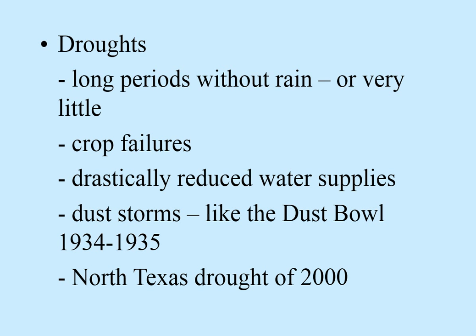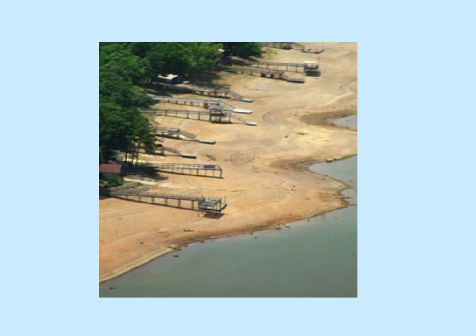Droughts — a long period without a lot of rain. Things that happen as a result include crop failures and drastic reductions in water supplies. Right now we're fixing to be at stage four with our water issues — it's going to get ugly. Without water, dust loosens up and we can have big dust storms. Our last big one was around 2000, and here we are again in 2011-2013 with this drought. Here's a picture of a lake where all the piers are not reaching the water — if you go to our lakes right now, you're going to see a lot of this.